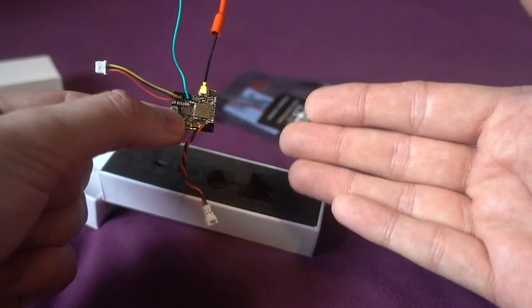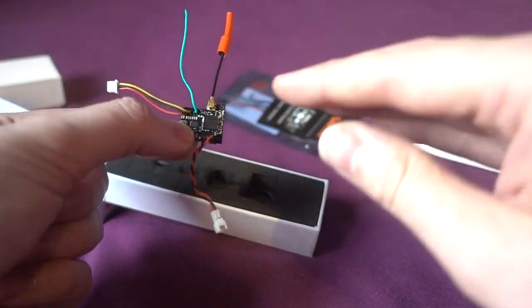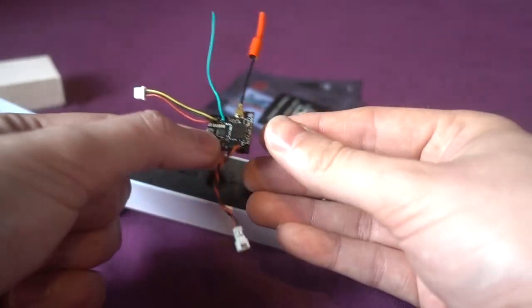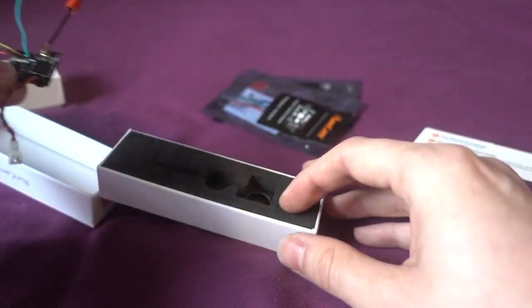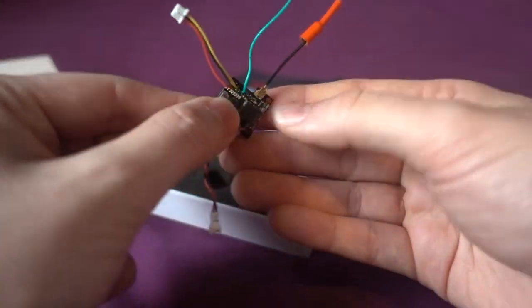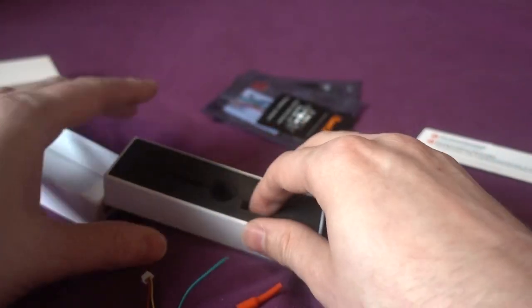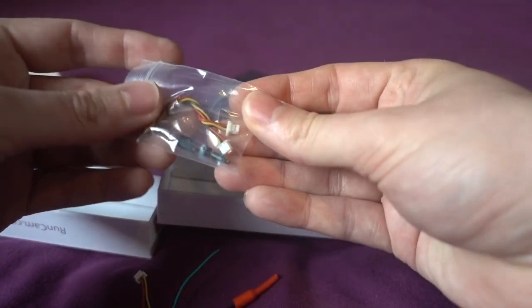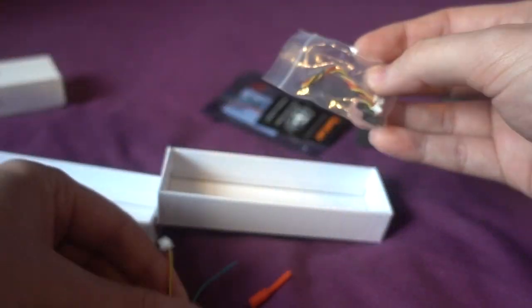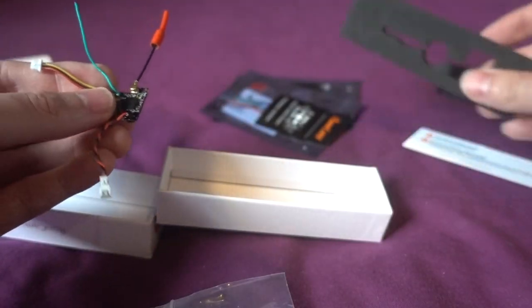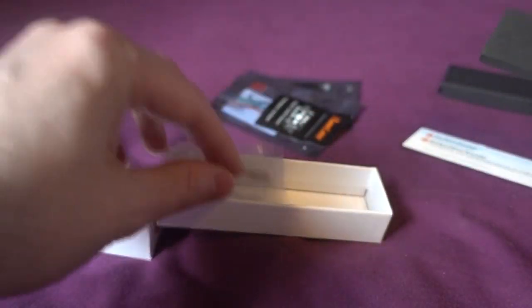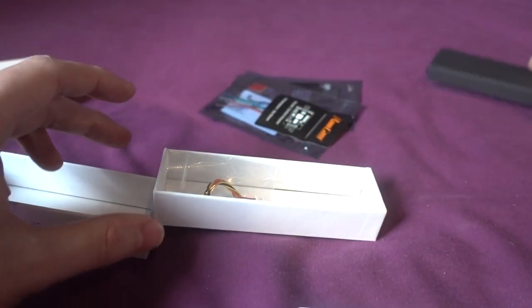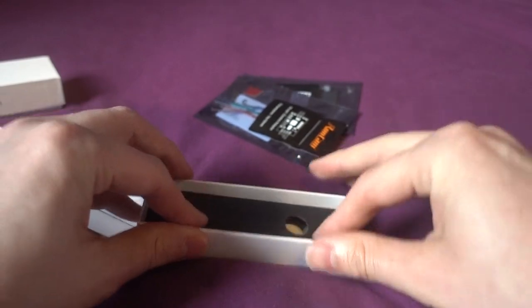So you can just change the channel through the on-screen display, but I think you're going to have to look at that chart to know what power that you're going to be getting out of it. But yeah, this is designed to piggyback on the back of a micro Swift of course. And we have got the brackets and the cable on the back there to do that.